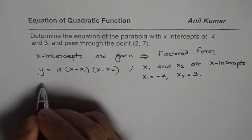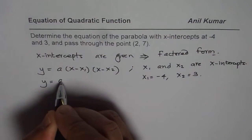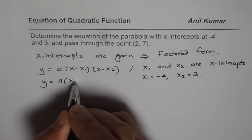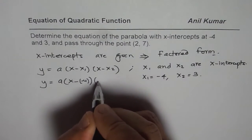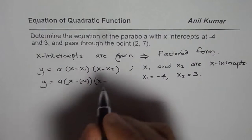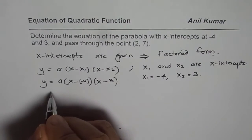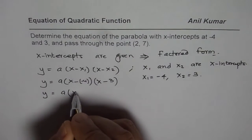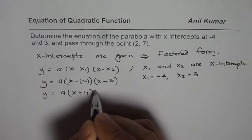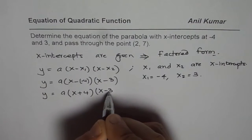So, we will substitute those values. We have y equals A times x minus minus 4, let me write minus 4, times x minus 3. So, we get y equals A times (x plus 4) times (x minus 3).